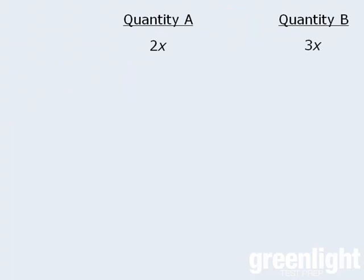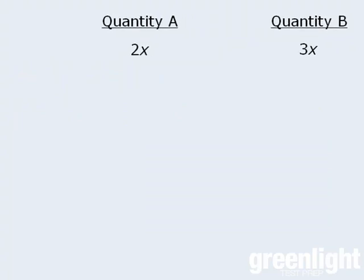So if we're not allowed to divide both quantities by x here, how can we solve this question? The quickest way is to subtract 2x from both quantities, and when we do so, we get the following. At this point, we're comparing x with 0. Well, since x could be less than 0, or greater than 0, or even equal to 0, the answer here must be D.